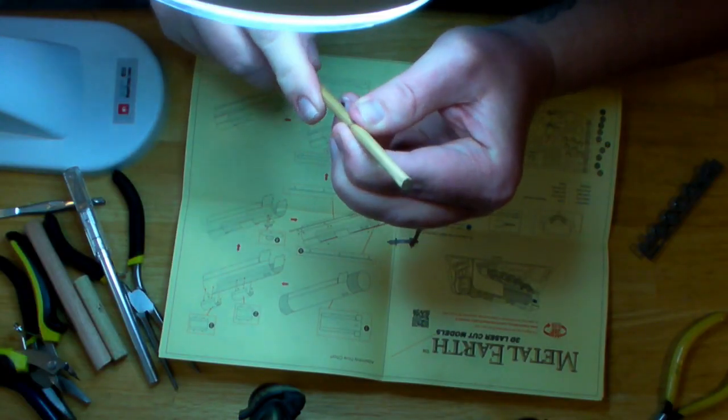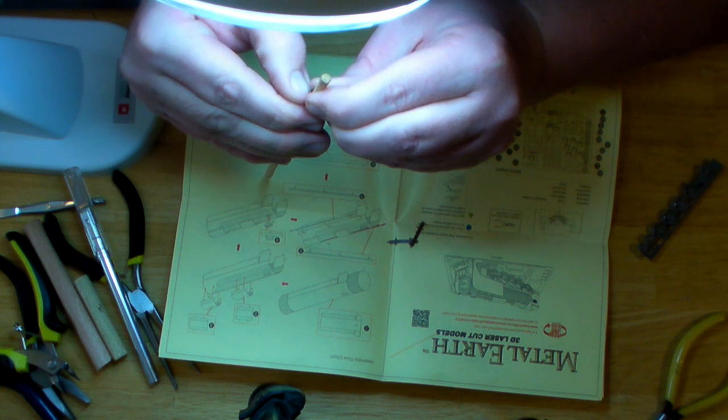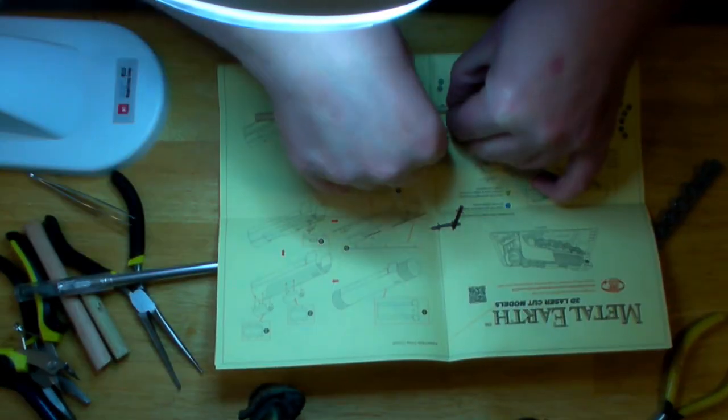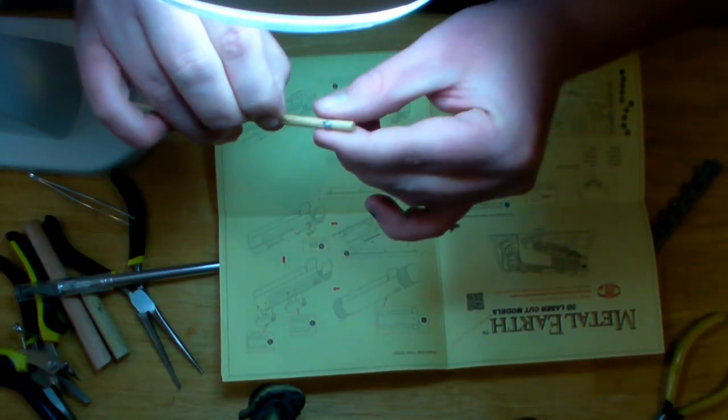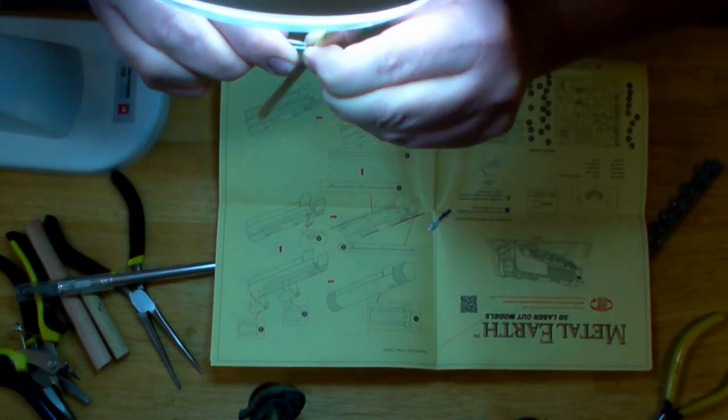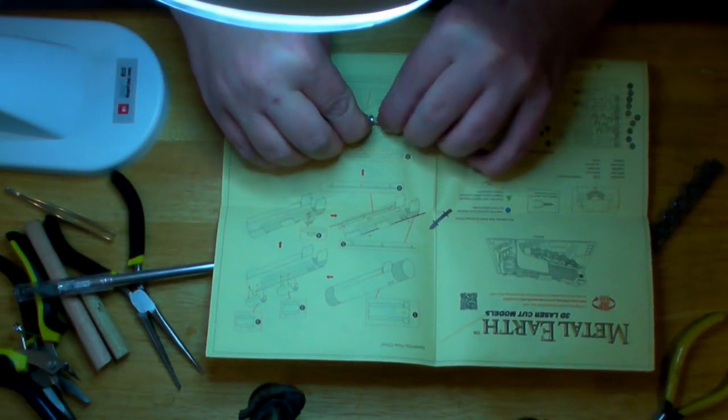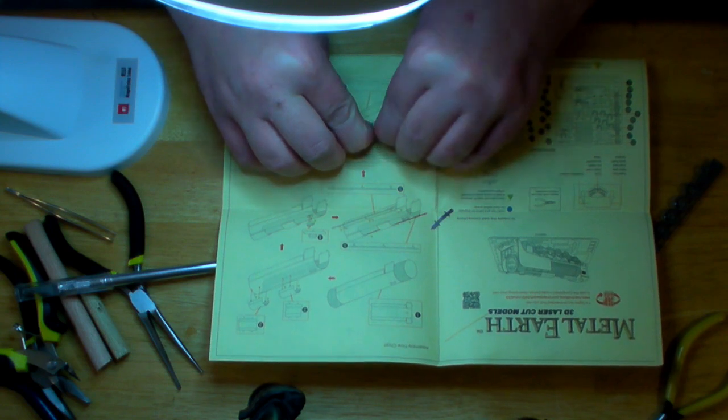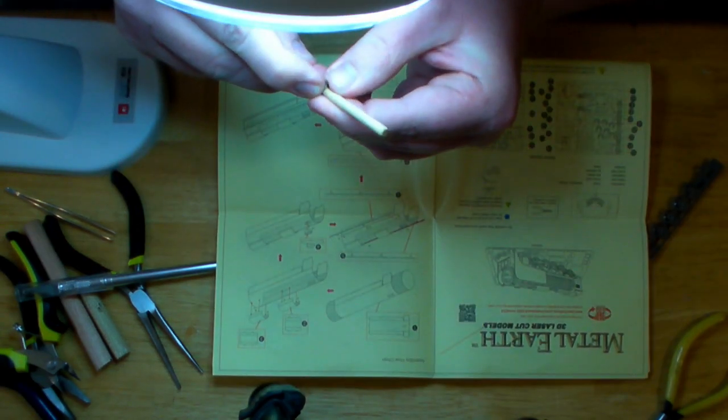When using a dowel rod or a pin to form the wheels, it helps to use something that is a tad smaller than the final wheel. That way you can get the shape and still have a little room to attach and bend the tabs over. You'll have a slightly oblong shape but that's easy to correct.